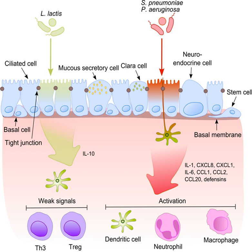The bronchial tree, for instance, contains a mean of 2000 bacterial genomes per square centimeter surface. The harmful or potentially harmful bacteria are also detected routinely in respiratory specimens. The most significant are Moraxella catarrhalis, Haemophilus influenzae, and Streptococcus pneumoniae. They are known to cause respiratory disorders under particular conditions, namely if the human immune system is impaired.